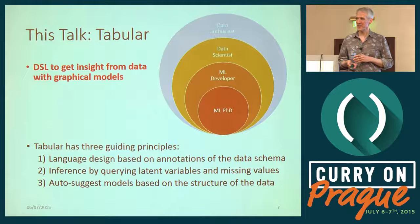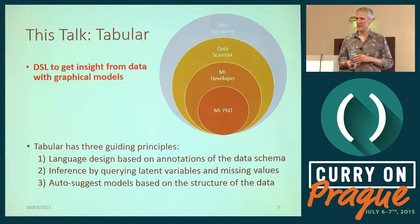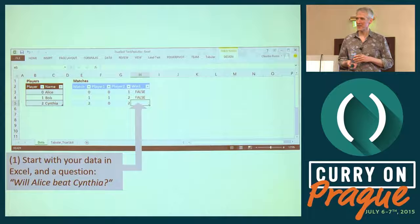We have three guiding principles. First: you can't do machine learning without data, so you'll have a relational schema — tables with foreign key relationships. Tabular is a domain-specific language that starts from that schema and lets you annotate it with probabilistic annotations explaining how data is generated, then does inference. We choose which variables to query by leaving blanks — blank cells in Excel — and the model tries to fill them in. Our aspiration is to auto-suggest models for different circumstances, though we've made only some progress on that.